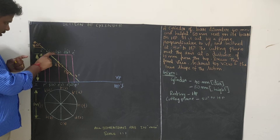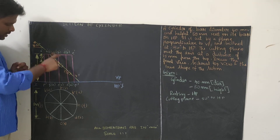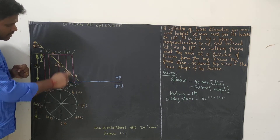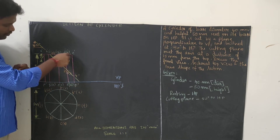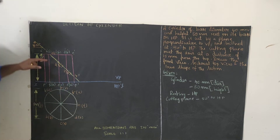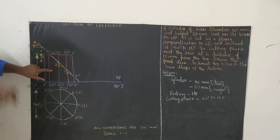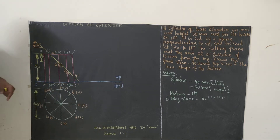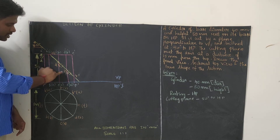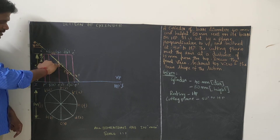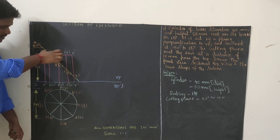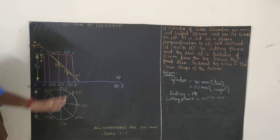Now identify all cutting points on the front view: 1-dash between B-dash and C-dash, 2-dash between C-dash and R-dash, 3-dash between D-dash and S-dash, 4-dash between E-dash and T-dash, 5-dash between F-dash and U-dash, 6-dash between G-dash and V-dash, 7-dash between H-dash and G-dash. We get two cutting points at most positions and one at E-dash/T-dash.